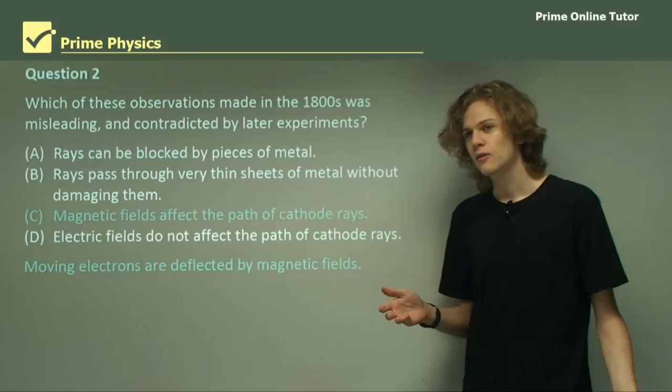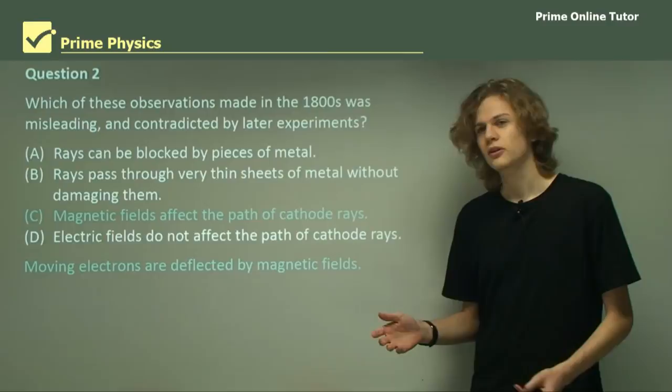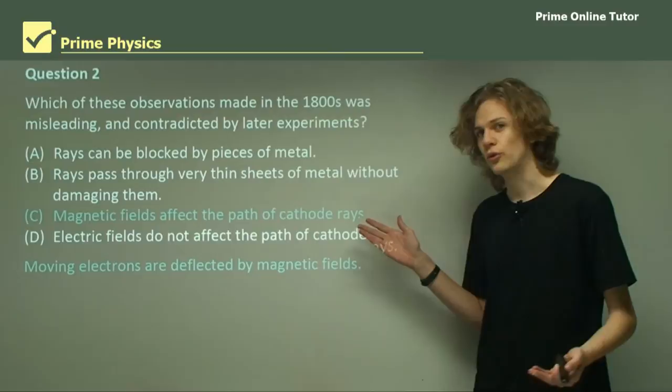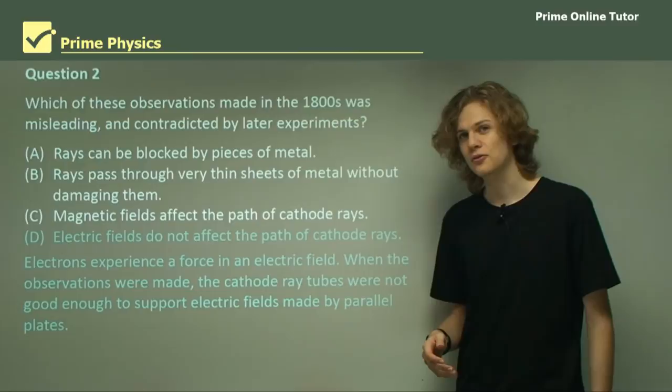Is it D then? The magnetic fields affect the path of cathode rays. Well, we know from our previous knowledge that charged particles in magnetic fields can have their path affected by the magnetic fields. So this is a correct observation.